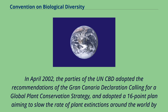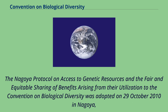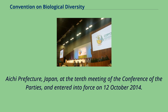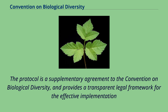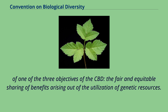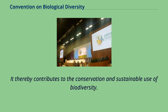The Nagoya Protocol on Access to Genetic Resources and the fair and equitable sharing of benefits arising from their utilization to the Convention on Biological Diversity was adopted on October 29, 2010 in Nagoya, Aichi Prefecture, Japan, at the 10th meeting of the Conference of the Parties, and entered into force on October 12, 2014. The protocol is a supplementary agreement to the Convention on Biological Diversity and provides a transparent legal framework for the effective implementation of one of the three objectives of the CBD: the fair and equitable sharing of benefits arising out of the utilization of genetic resources. It thereby contributes to the conservation and sustainable use of biodiversity.